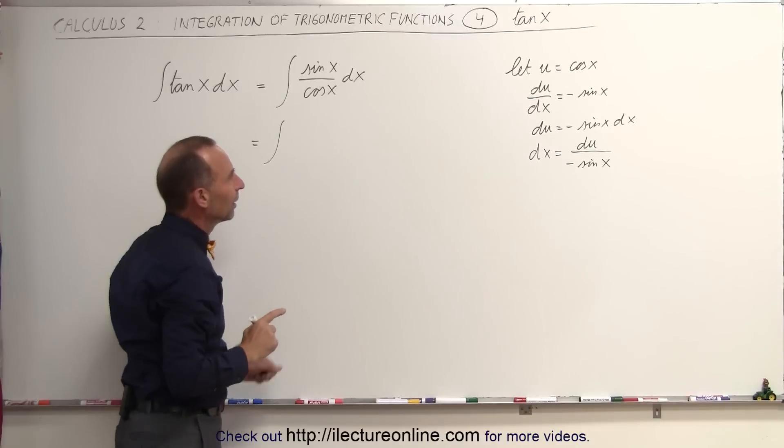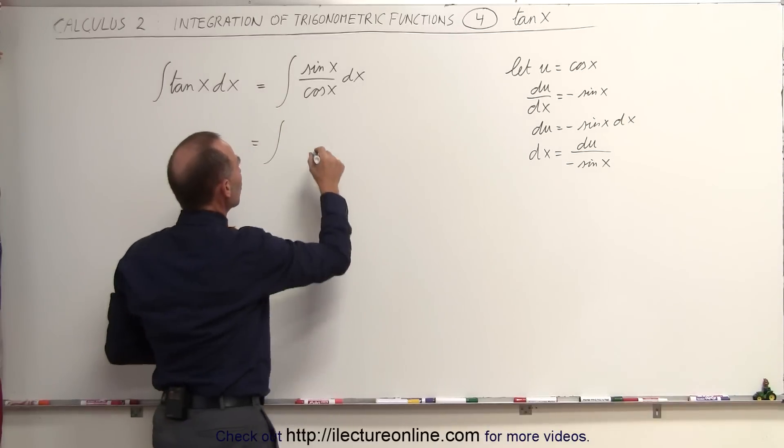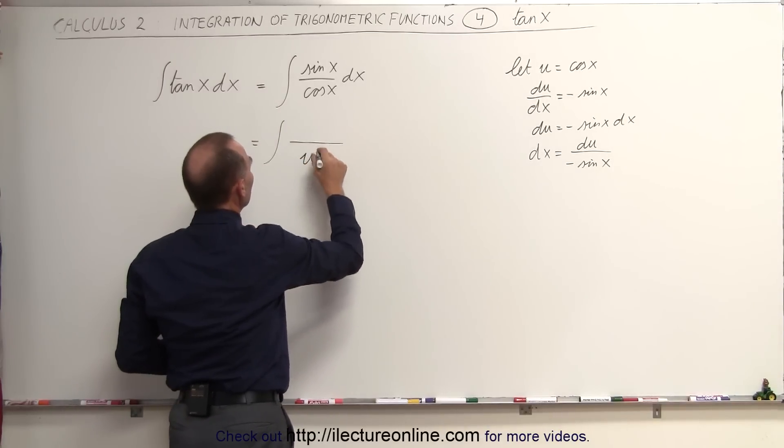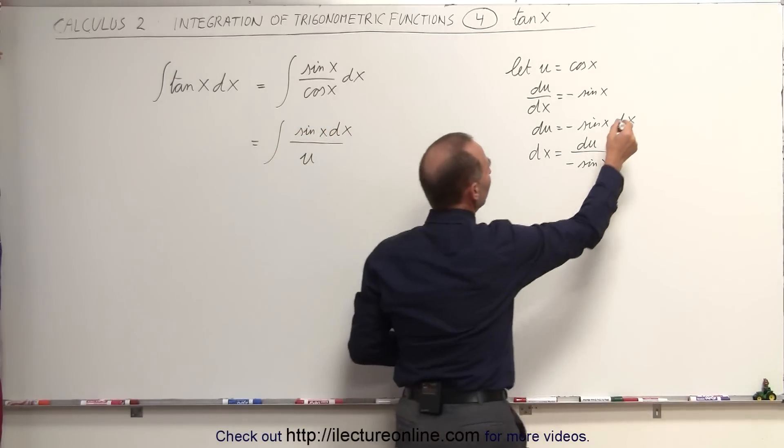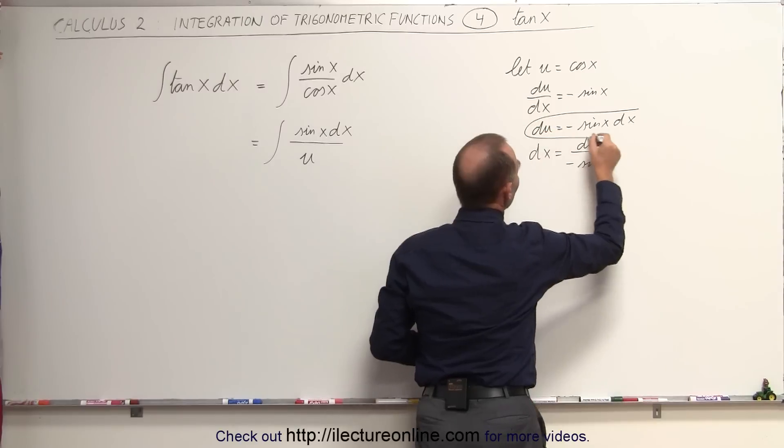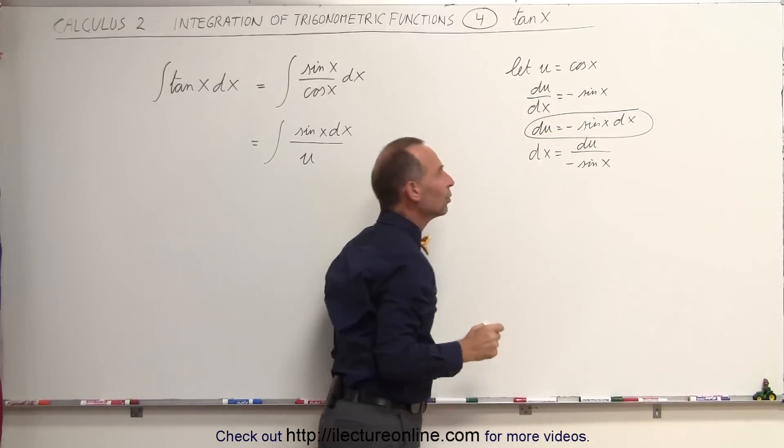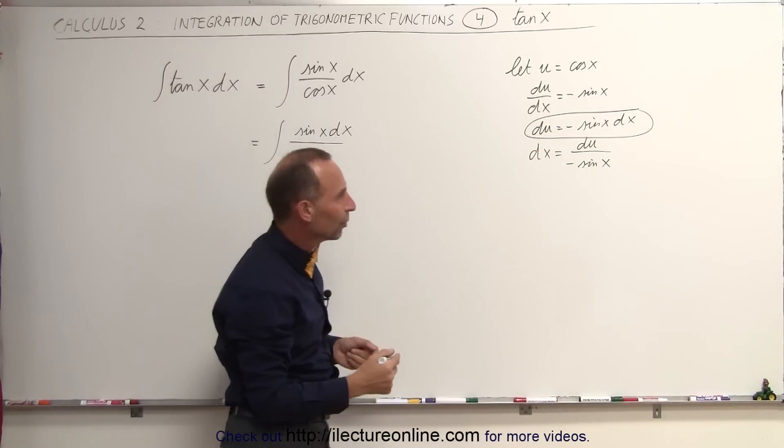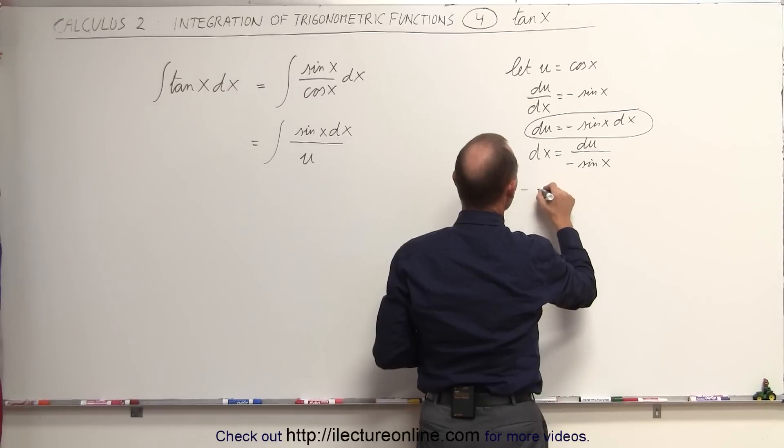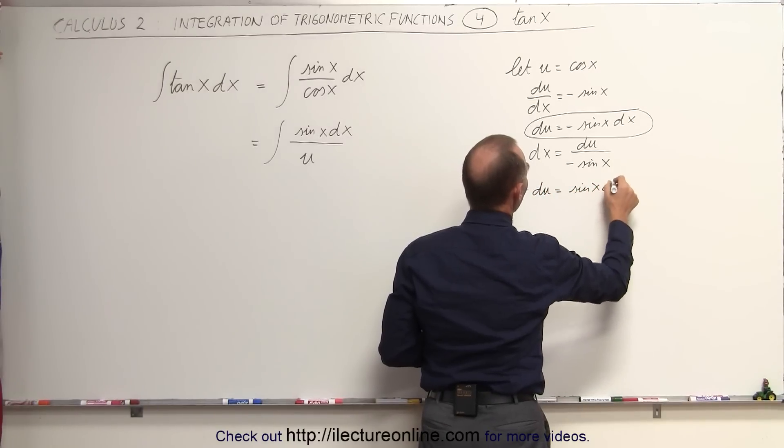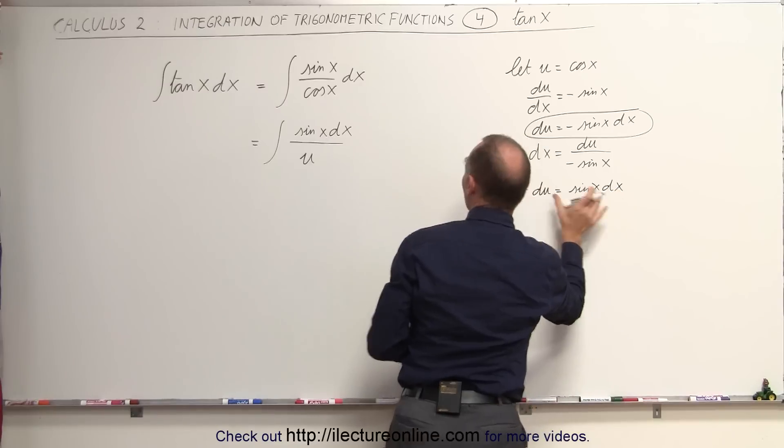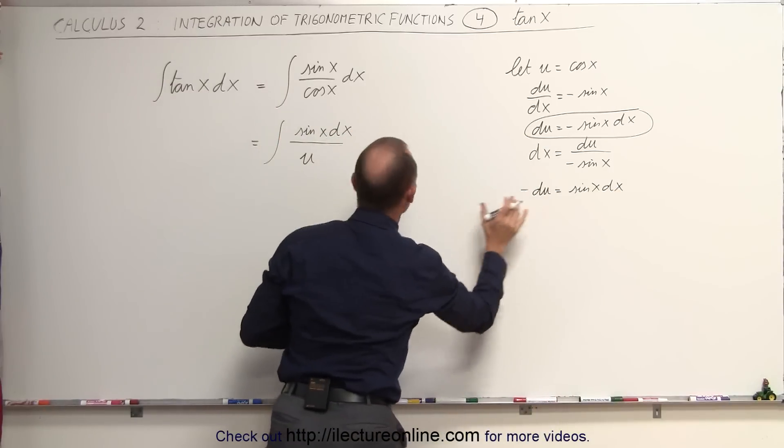We can write this as the integral where the cosine of x in the denominator becomes u. In the numerator we have the sine of x times dx, and let's take a look over here. The sine of x times dx times the negative is equal to du. So if we multiply both sides by a negative, we get minus du equals the sine of x times dx. This can now be replaced by the minus du.